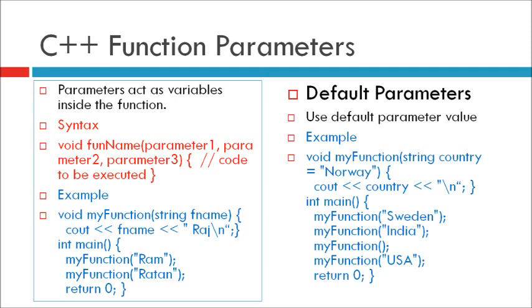void MyFunction string country equal to Norway. Next statement is cout country. In main function, integer main.